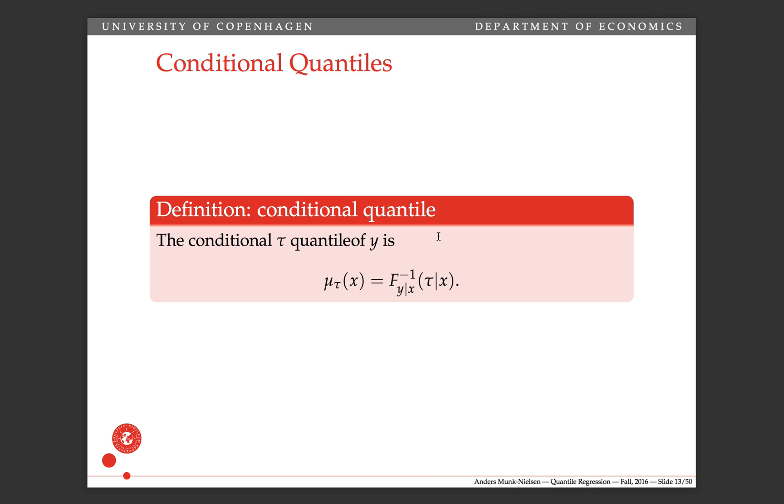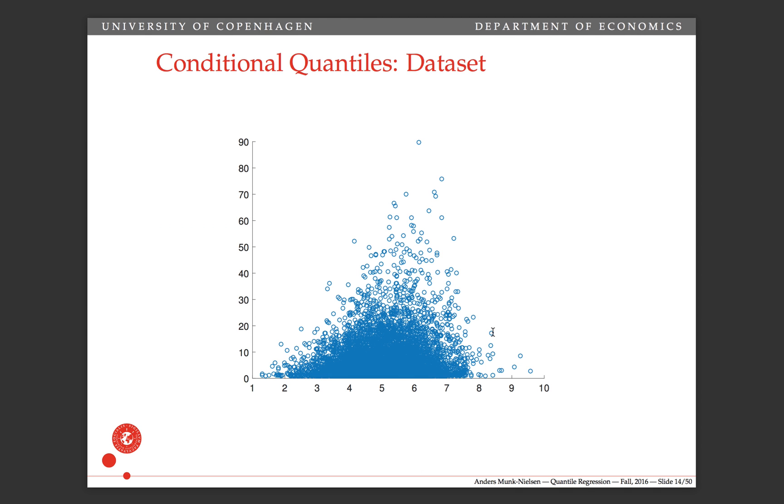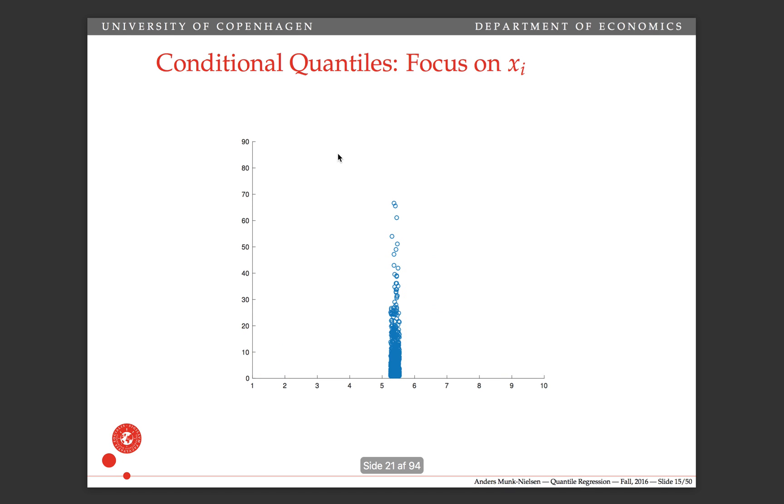So the conditional quantile is just the same thing except that the CDF is now conditional on x. How to think about that? Here's a data set simulated from a quantile regression model where we have x on this axis and y on that axis, and then we can think about saying I want to look at quantiles conditional on some x. It's not entirely true because it needs to be an infinitely narrow interval, but this gives you an idea of what's going on. We're looking at this x here. What does the distribution look like there?